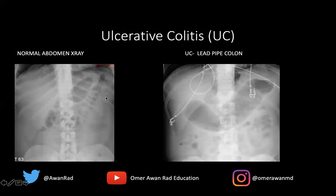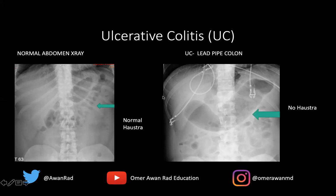On plain x-ray, a normal colon shows haustral markings — gas-filled loops separated by visible haustra. A lead pipe colon in ulcerative colitis appears featureless, with no haustral markings along the transverse colon. This is a very characteristic and high-yield image for the USMLE to suggest ulcerative colitis.